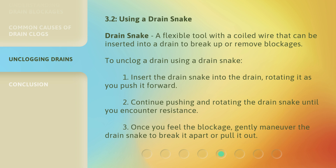Using a drain snake. Drain snake: a flexible tool with a coiled wire that can be inserted into a drain to break up or remove blockages. To unclog a drain using a drain snake: 1. Insert the drain snake into the drain, rotating it as you push it forward. 2. Continue pushing and rotating until you encounter resistance. 3. Once you feel the blockage, gently maneuver the drain snake to break it apart or pull it out.